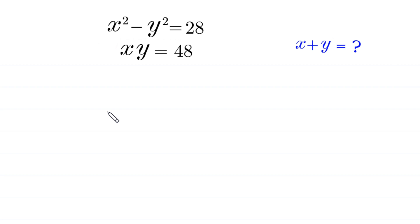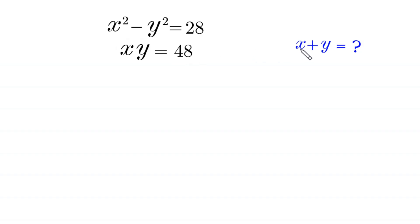Hello everyone. Welcome to how to solve this very nice system of equations. x squared minus y squared is equal to 28, and x times y is equal to 48. Our job is to find all possible values of x plus y. So let's start.